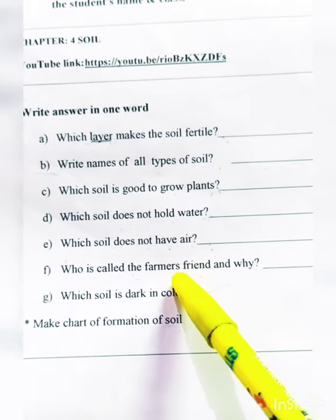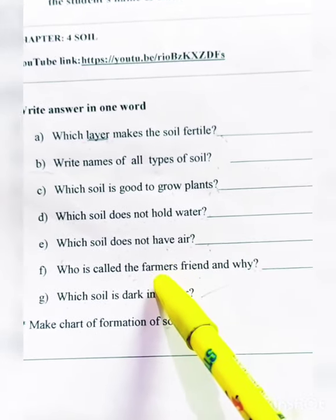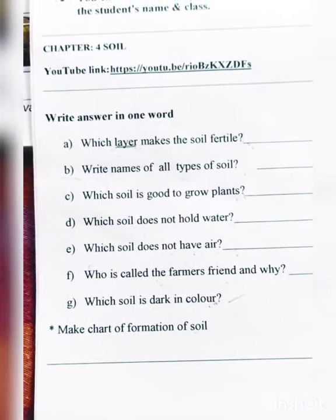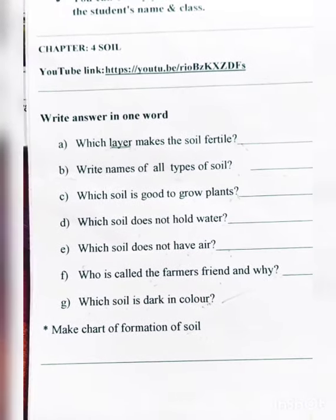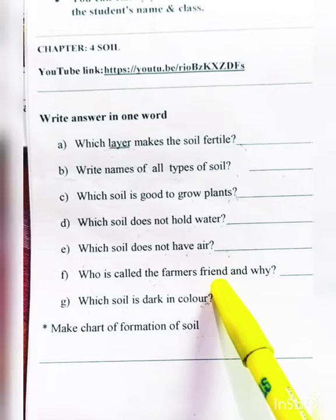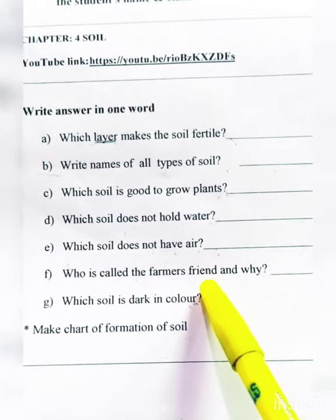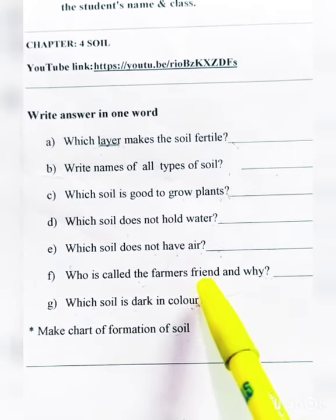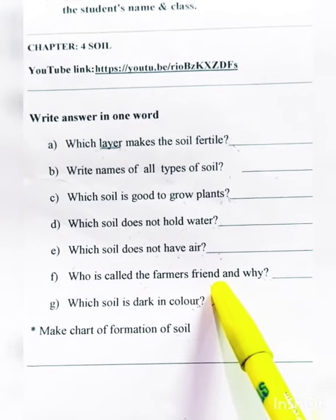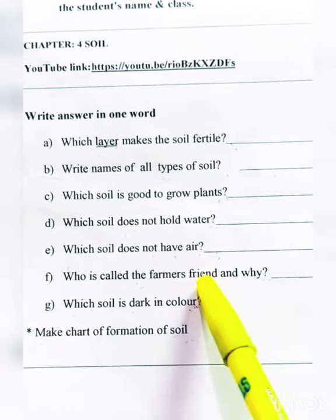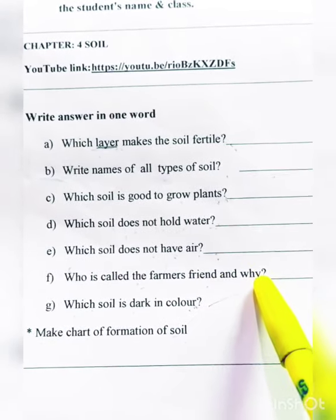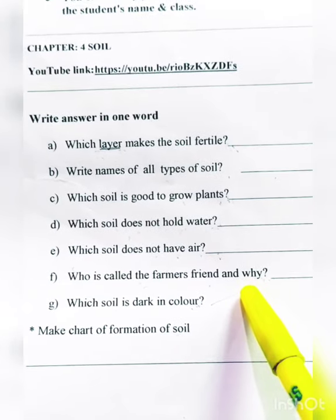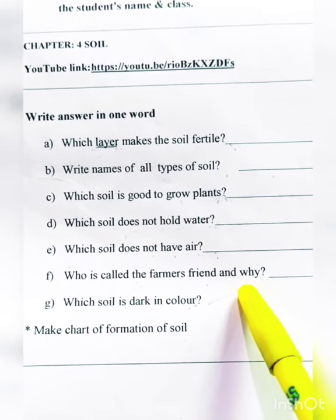Which is called the farmer's friend and why? The earthworm is the farmer's friend. The earthworm is useful because it creates tunnels in the soil, which helps the soil.